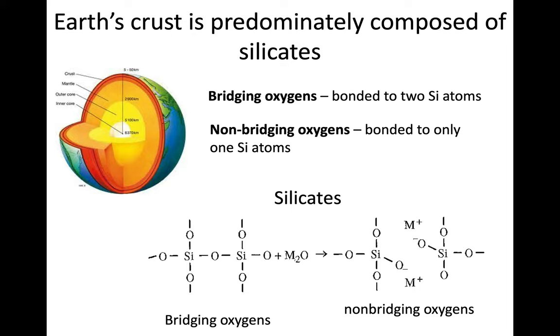Silicates have this SiO₄ tetrahedron structure. We think about oxygens in two ways: bridging oxygens bonded to two silicon atoms forming chains, and non-bridging oxygens bonded to only one silicon atom. The ones bonded to two like this one here is a bridging oxygen. Where the oxygen is only tied to one silicon, that's a non-bridging oxygen. This tells us a lot about the structure we're going to get in the greater silicate structure.